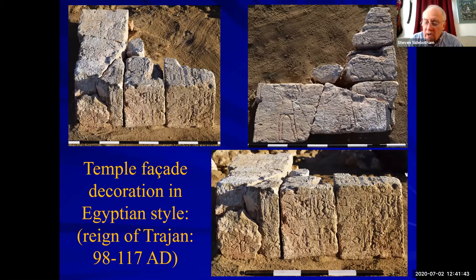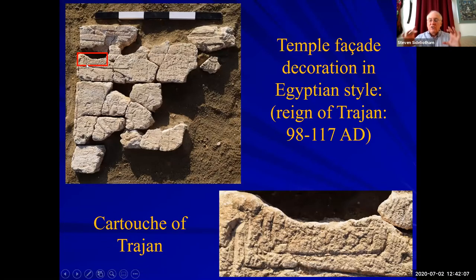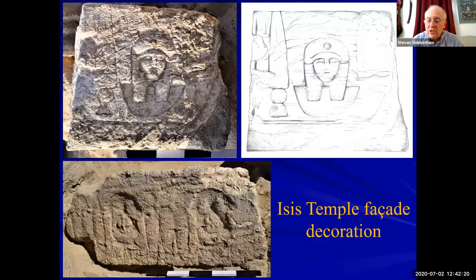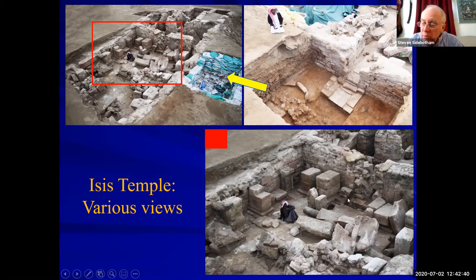We know the facade of the temple was decorated not only with this magnificent inscription dating from Tiberius but also later in the second century AD, there was a redecoration in Egyptian style during the reign of the Emperor Trajan. We know that because there's a cartouche — a little oval-shaped thing typical in Egypt containing the name of the ruler — that belongs to the Roman Emperor Trajan. Here's some of the other decoration from the facade of the temple. Then you come to the courtyard area, which had large numbers of dedications including statuary and inscriptions written in Greek, which was the lingua franca of the Eastern Roman Empire. These date from the first century AD up into the middle of the third.